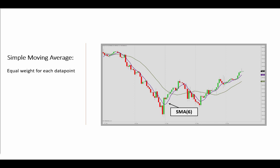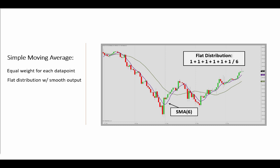To illustrate the main points here, we'll talk about the simple moving average, the SMA, that of course places equal weight to all the data points in the lookback period. You can think of this as a flat distribution where each data point has equal weight. When averaging over a longer period, let's say 24 bars, we'll see a smoother and perhaps more aesthetically pleasing output, but it will have limited information value because it is further removed or lagging the current price action.